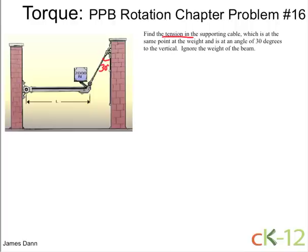Let's start by drawing the forces acting on this beam. We have the tension force that goes along the cable. We have the force of gravity, and that's just the weight of the box, mg. And then we also have the force here, which I'm going to call the hinge force.